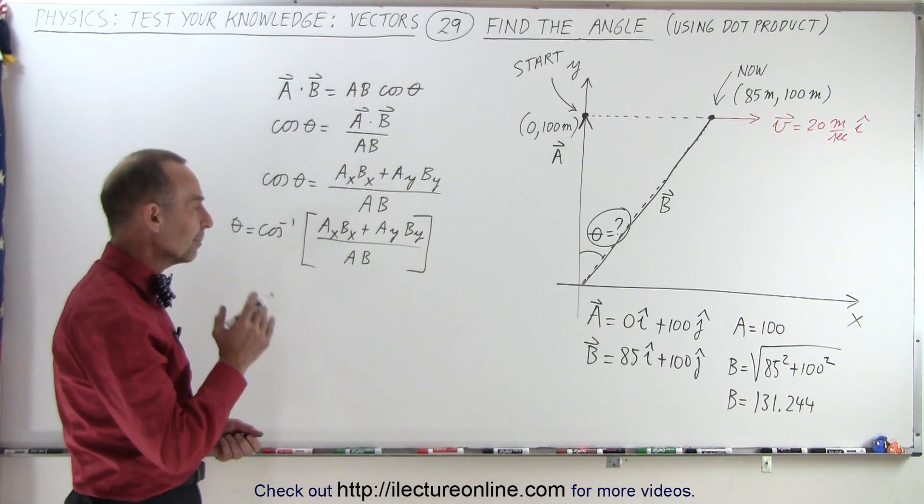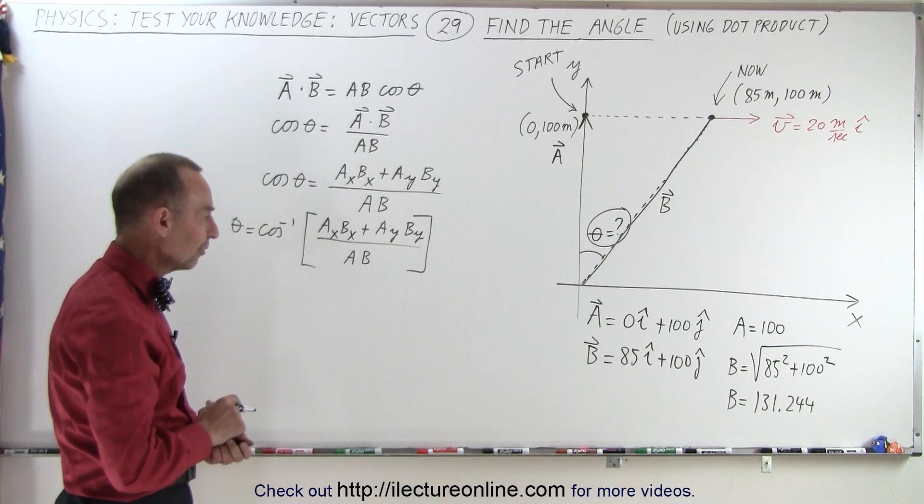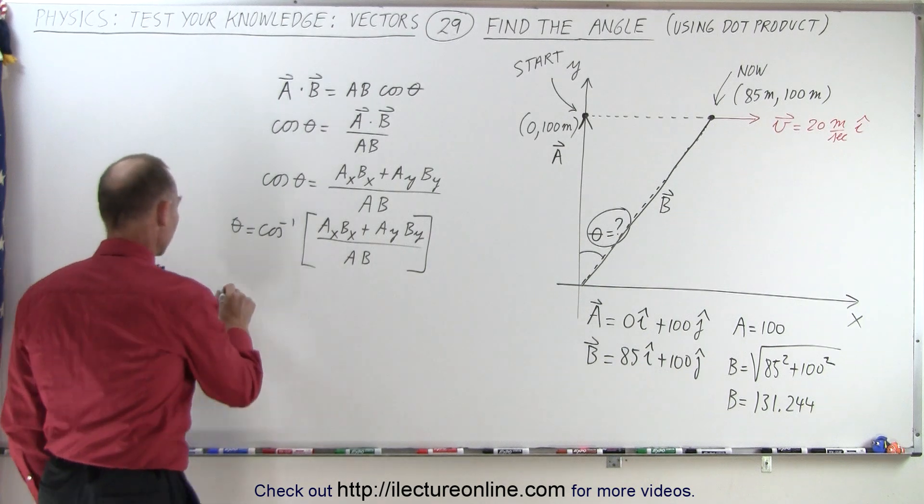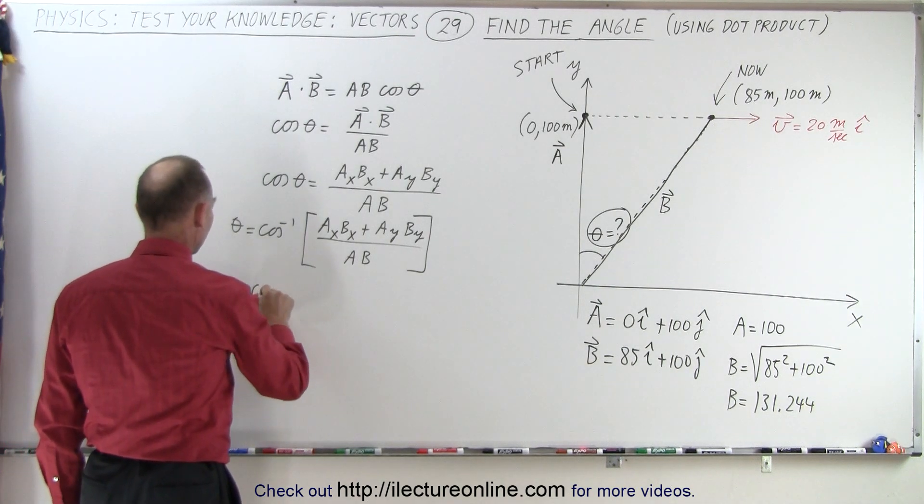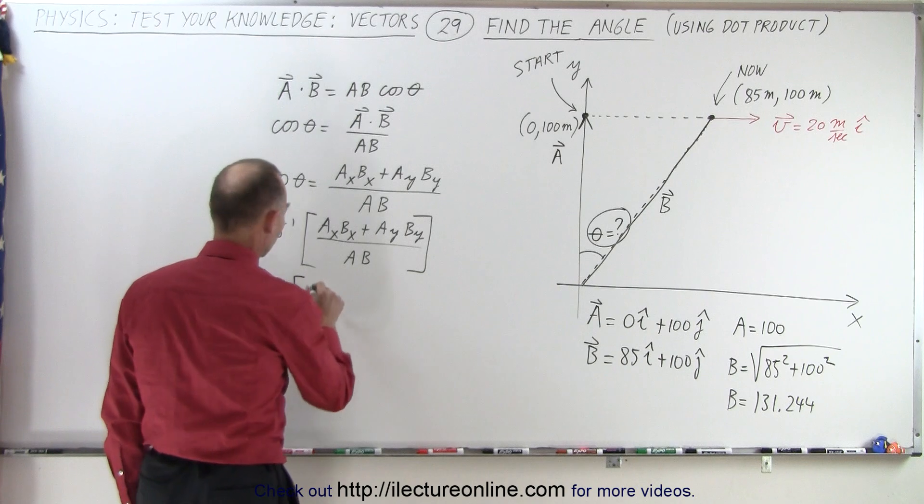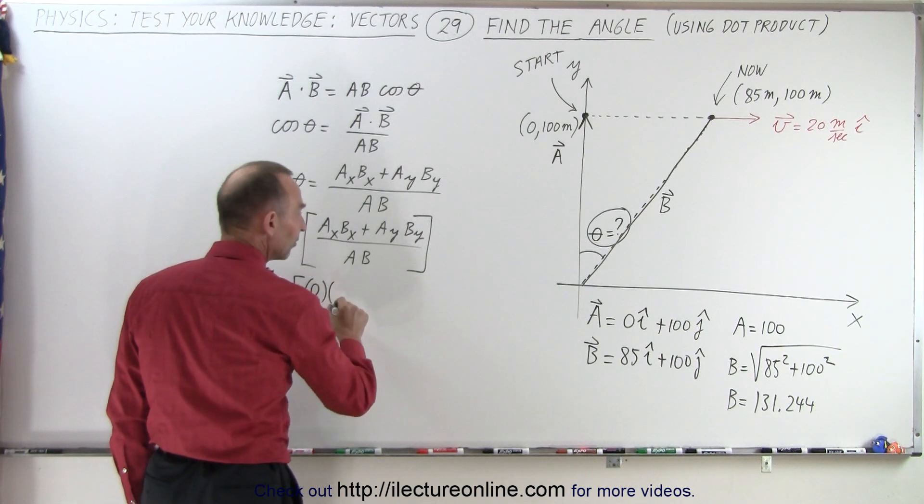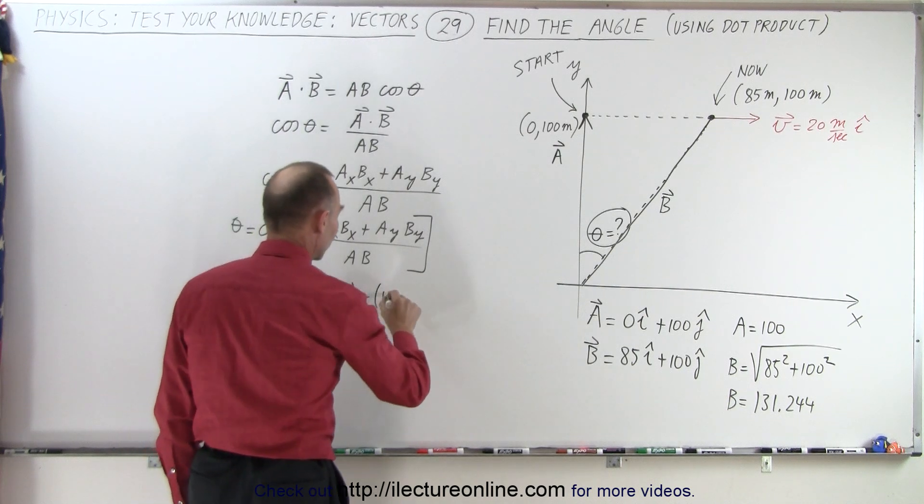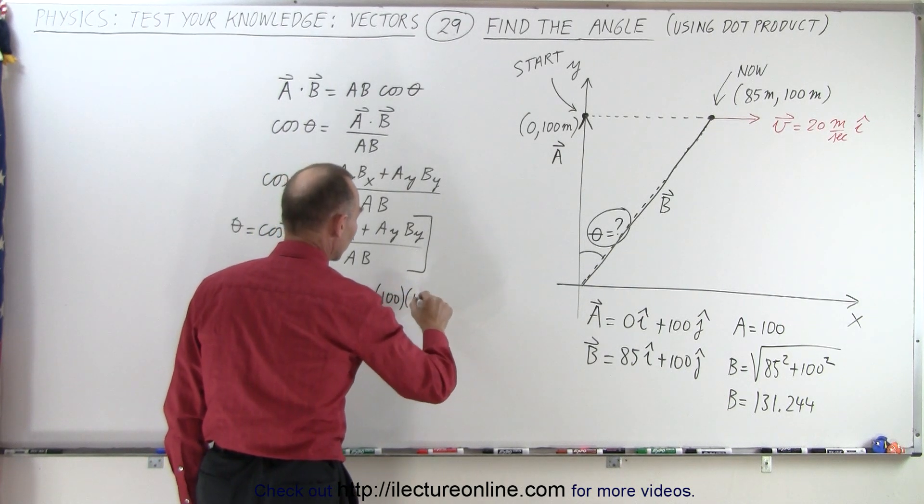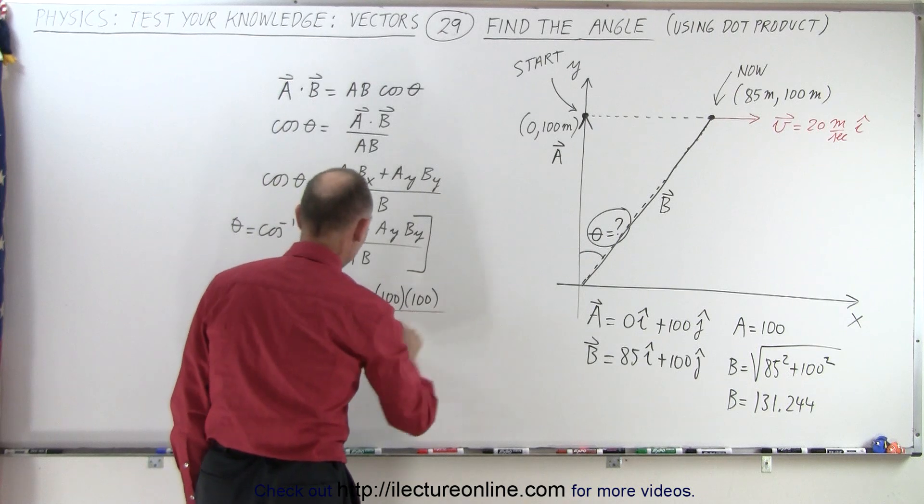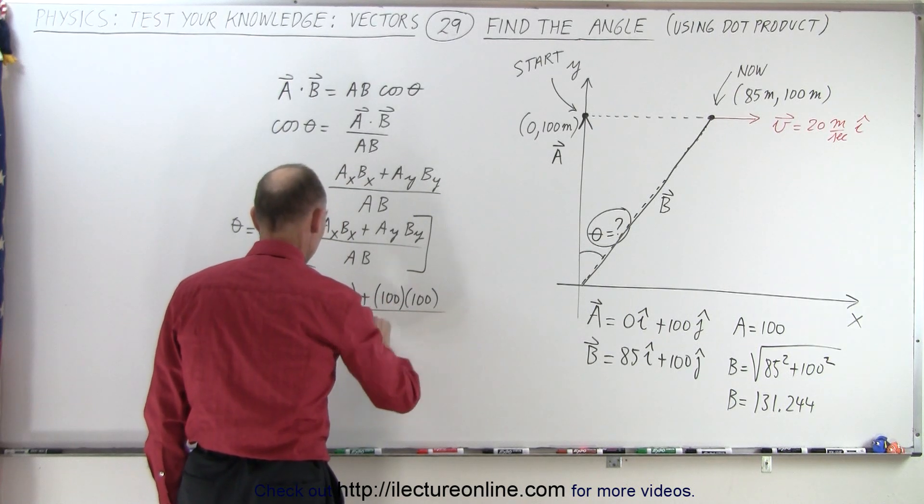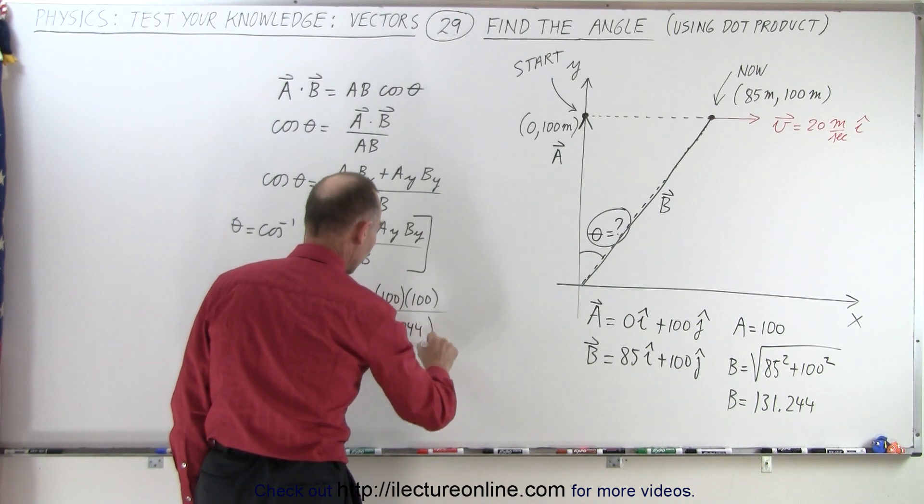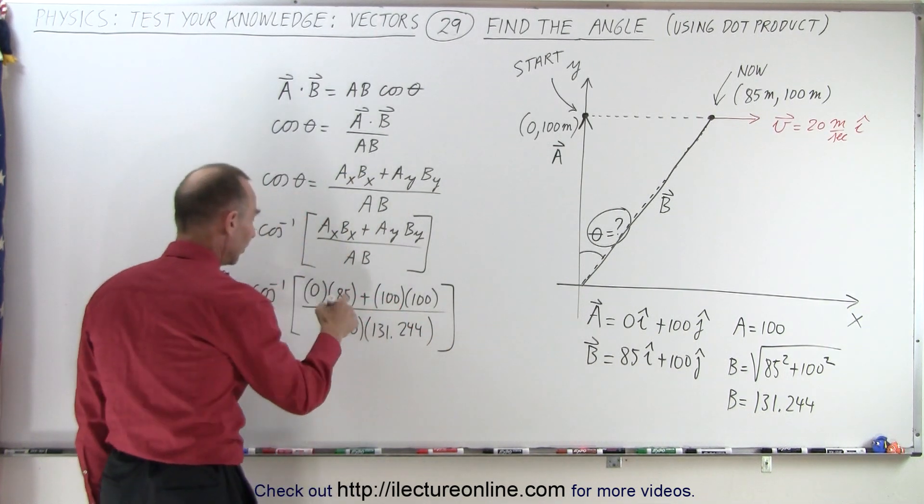So now I have the magnitude of a, the magnitude of b, and the two vectors defined in the x and y components. I'm now ready to plug that in here. So theta is equal to the inverse cosine of a sub x, which is 0, times b sub x, which is 85, plus a sub y, which is 100, b sub y, which is 100, all divided by 100 times 131.244.